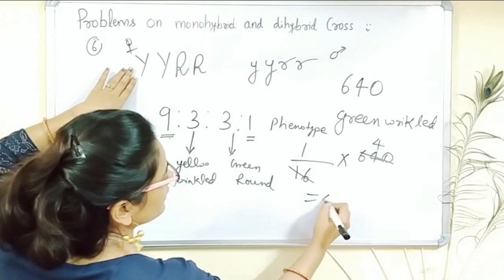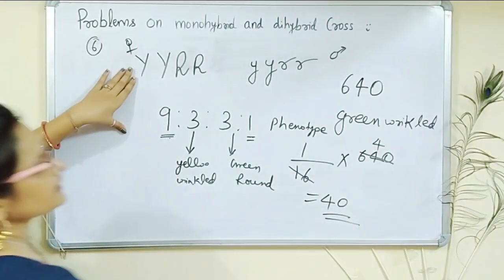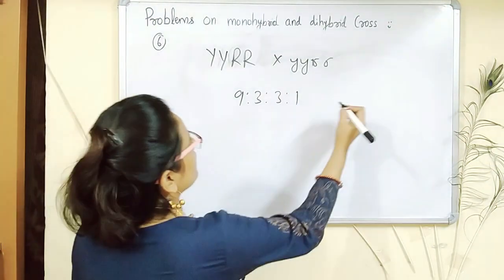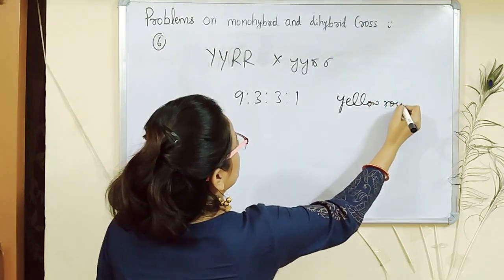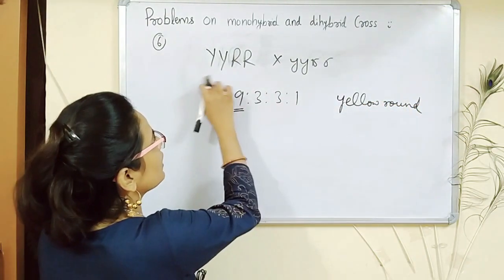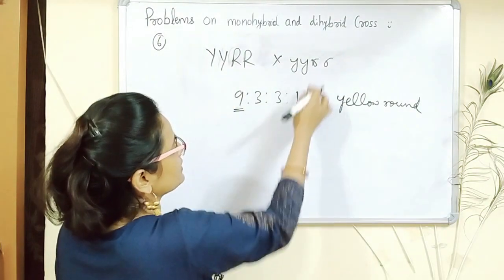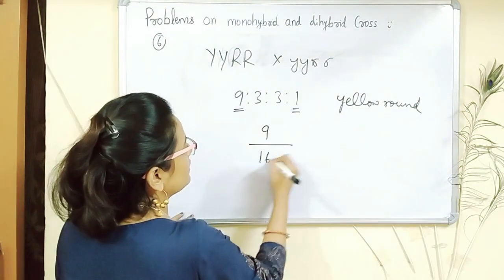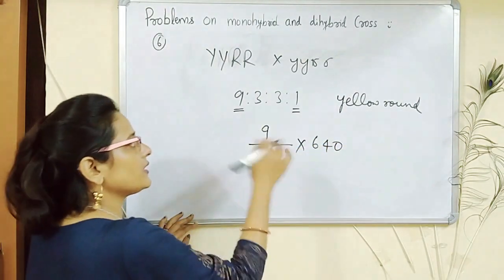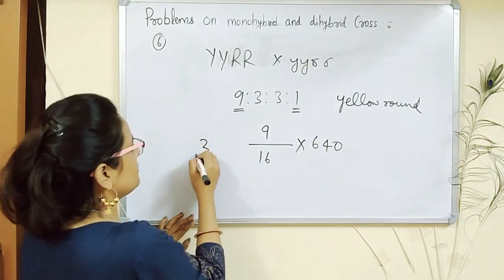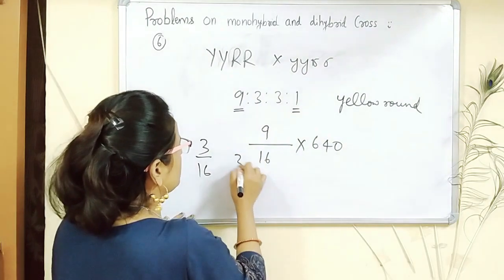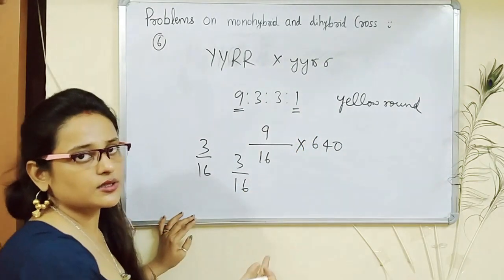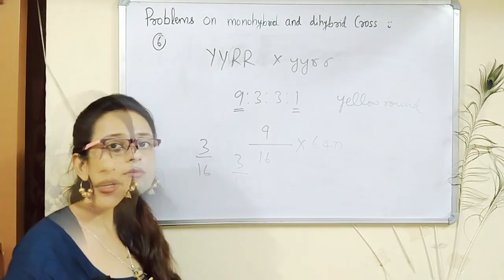So forty offspring have the green wrinkled phenotype. In the same question, if you are asked how many are yellow round, the highest number belongs to the dominant parent, so the answer would be 9/16 × 640. If asked yellow wrinkled, it is 3/16; if asked green round, it is also 3/16. And as per the original question — green wrinkled — it is 1/16. This is how to solve this type of question.